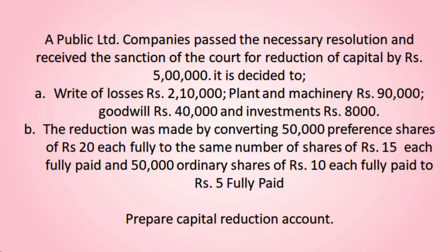Next, plant and machinery rupees 90,000, goodwill rupees 40,000, and investments rupees 8,000. The reduction was made by converting 50,000 preference shares of rupees 20 each fully paid to the same number of shares of rupees 15 each — so 20 rupees value has been reduced to 15 rupees. And ordinary shares, that is equity shares, of rupees 10 each fully paid are reduced to rupees 5 each.